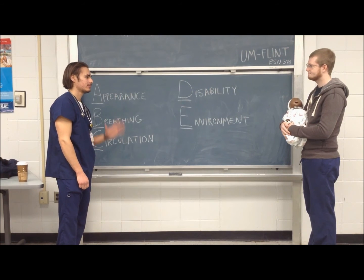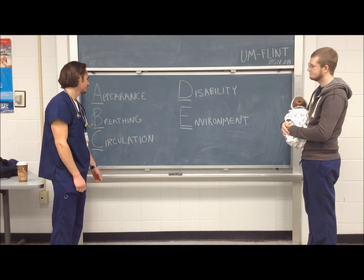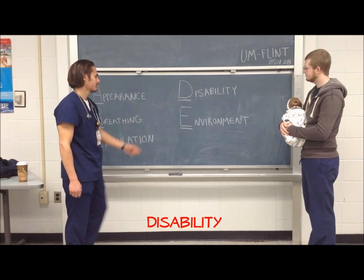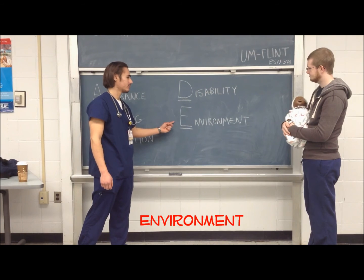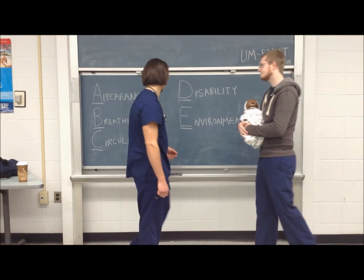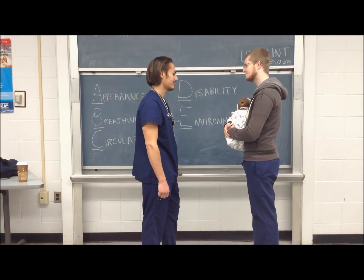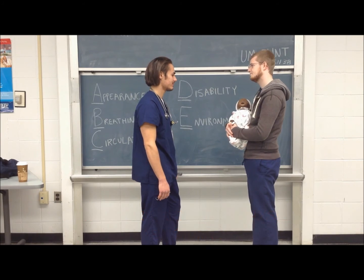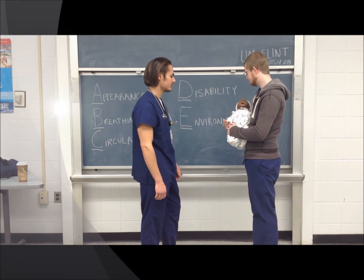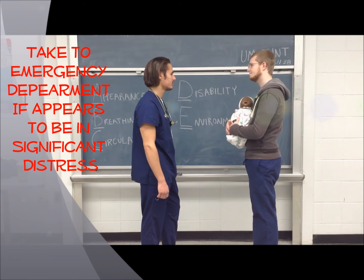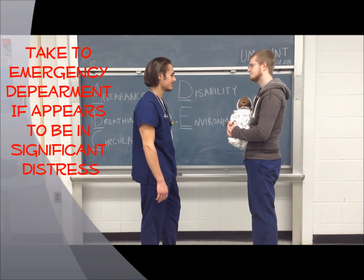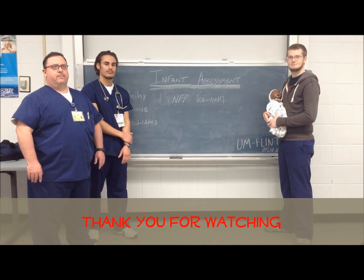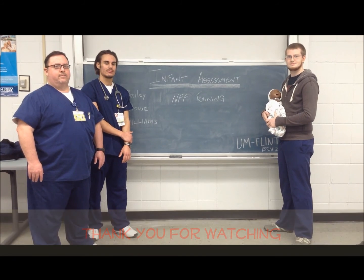Just to recap, the five steps of our general assessment are appearance, breathing, circulation, disability, and environment. If any of these assessment areas are abnormal, you should recommend follow-up with the baby's primary health care provider. If the baby appears to be in significant distress, direct the parents to call the provider and/or take the child to the emergency department. This concludes the general infant assessment NFP training. Thank you.